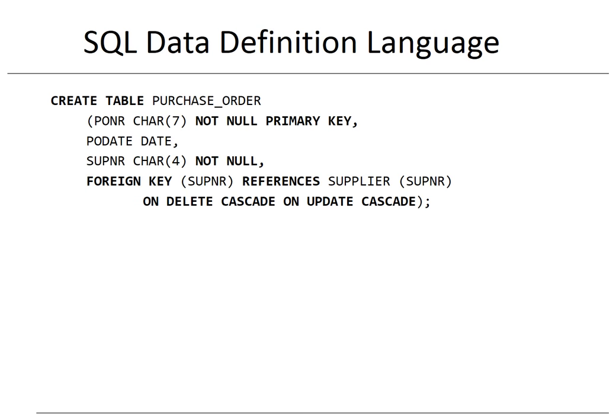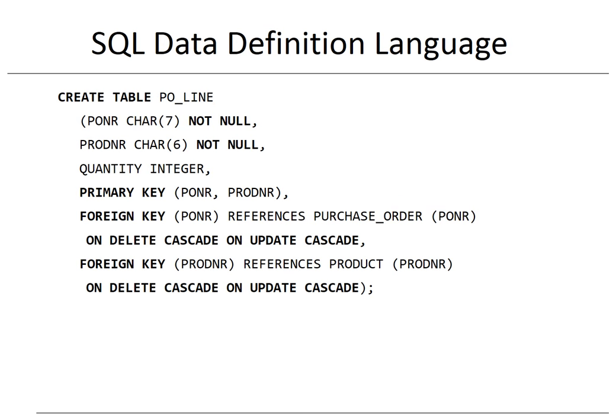Here you can see the purchase order table defined with the purchase order number, purchase order date, and supplier number columns — the latter being a foreign key. We conclude our database definition with the purchase order line table, which has three columns: purchase order number, product number, and quantity. Both purchase order number and product number are foreign keys and together make up the primary key of the table.